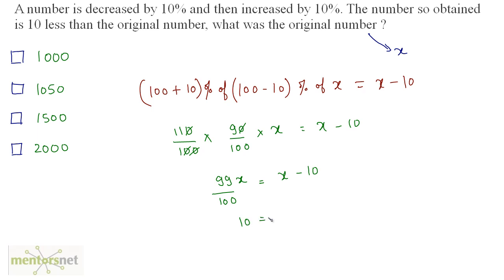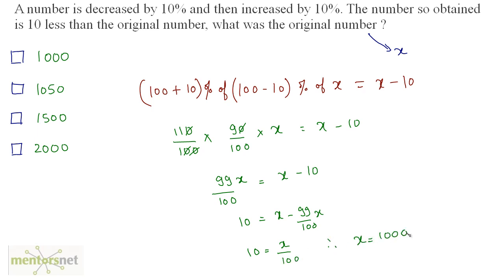So 10 equals x minus 99 upon 100 times x. Therefore, 10 equals x by 100, and so x equals 1000. The value of the original number is 1000.